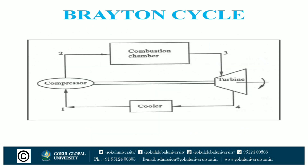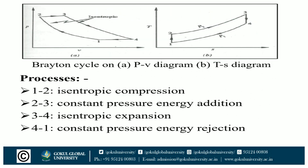Now we discuss the air standard cycle for gas turbine: the Brayton cycle. The ideal cycle for a gas turbine is the Brayton or Joule cycle. The Brayton cycle has two constant pressure processes and two isentropic processes. As shown in the PV and TS diagram and line diagram of the Brayton cycle: the air enters the compressor at point 1 and is compressed isentropically to point 2. The air then enters the combustion chamber where fuel is injected and heat is added to the air at constant pressure, raising its temperature from point 2 to point 3.